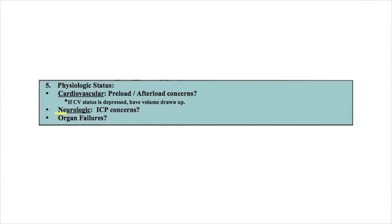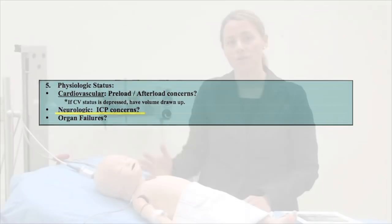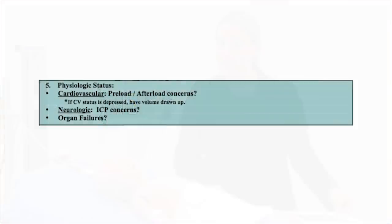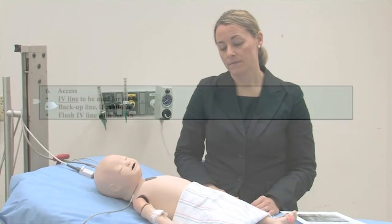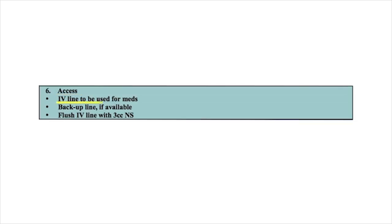Additionally, are there any neurological concerns? Does this patient have any indication of an elevated ICP? You may want to choose a different medication based on your cardiovascular and neurological concerns. Also, are there any other organ failures? Does the patient have hepatic failure or renal dysfunction? All of those are going to influence your choice of medication. Next, you want to evaluate the patient's access — do you have a functioning IV in order to give medications? You want to make sure you have a safe and stable way to provide medications during the procedure.